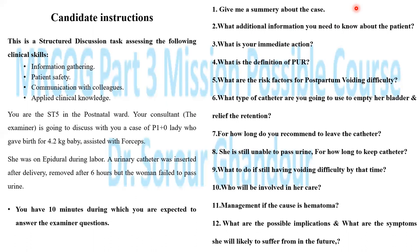Other possible questions include: what is the definition of postpartum urine retention and what are the risk factors of postpartum voiding difficulty or urine retention; what are the types of catheter you are going to use to empty the bladder; for how long you are going to leave the catheter; after removal of the catheter the woman is still having voiding difficulty — what are you going to do; whom you are going to involve in her care; what will be included in the multidisciplinary team; if the cause is hematoma, what will be your management; and what are the possible implications or complications?